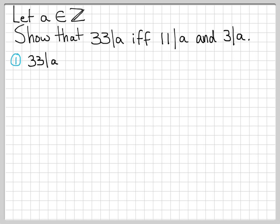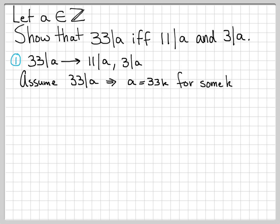So case 1, let's show that when 33 divides a, this implies both 11 divides a and 3 divides a. Okay, so assume 33 divides a. What does this mean? Well, that means that I can write a as 33 times some number k for some k.